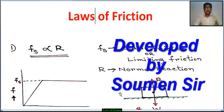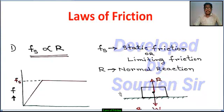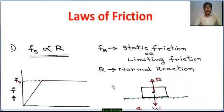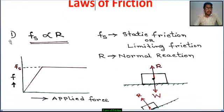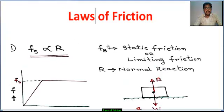Hello students, welcome to my channel. Today we learn the law of friction. Number one law: static friction fs is proportional to R. fs varies with R. fs means static friction or limiting friction — limiting friction means just at the point of movement. R is the normal reaction.